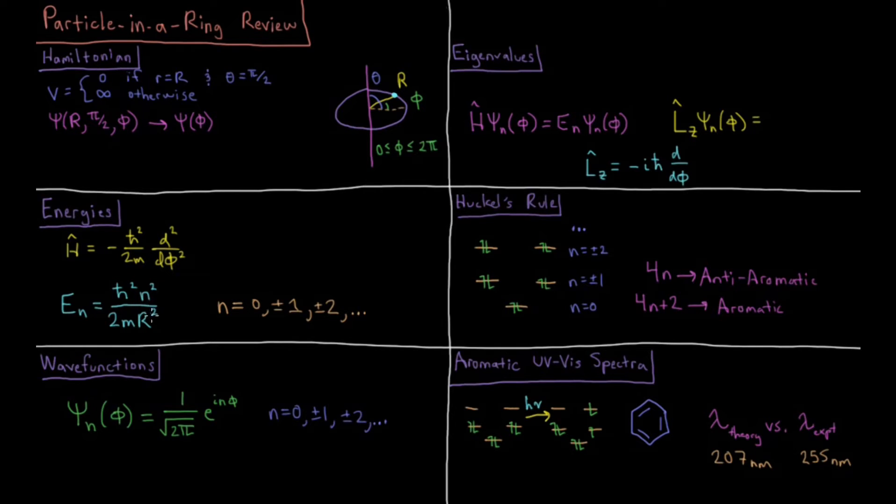So the energy depends on a quantum number n, depends on the mass, which is going to be the mass of the electron for most of the systems we're interested in, and the radius of our given ring.